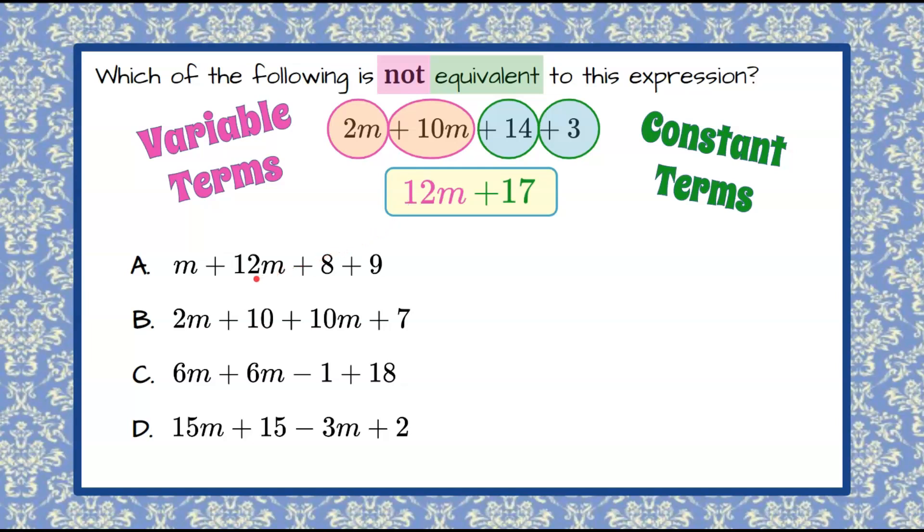So let's look at choice A. Choice A has like variable terms of m and 12m. This m is an invisible one right here, so that's 1m plus 12m is 13m. And then we have our constants 8 plus 9, which are 17. 13m is not equivalent to 12m. So I think we've already found our answer. Choice A is not equivalent.